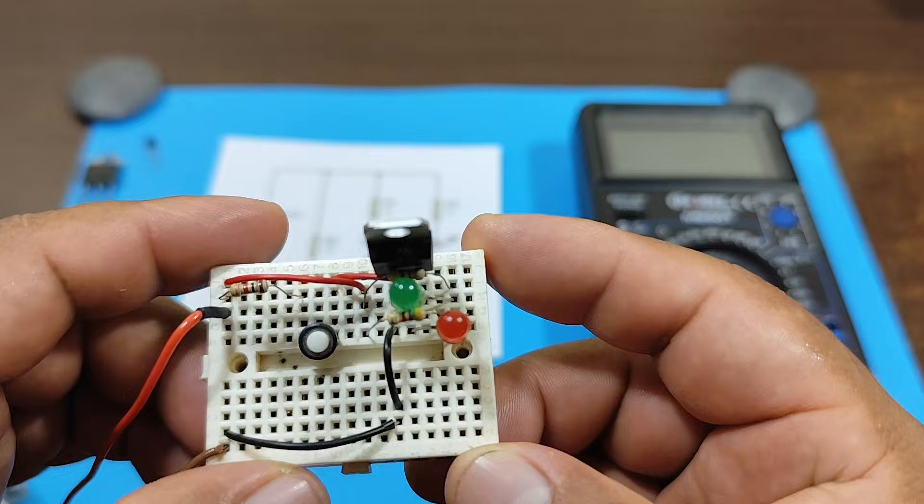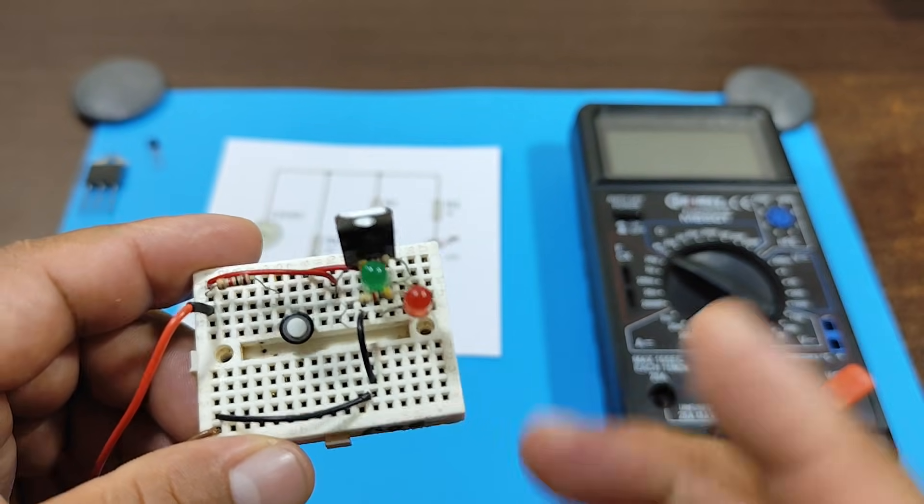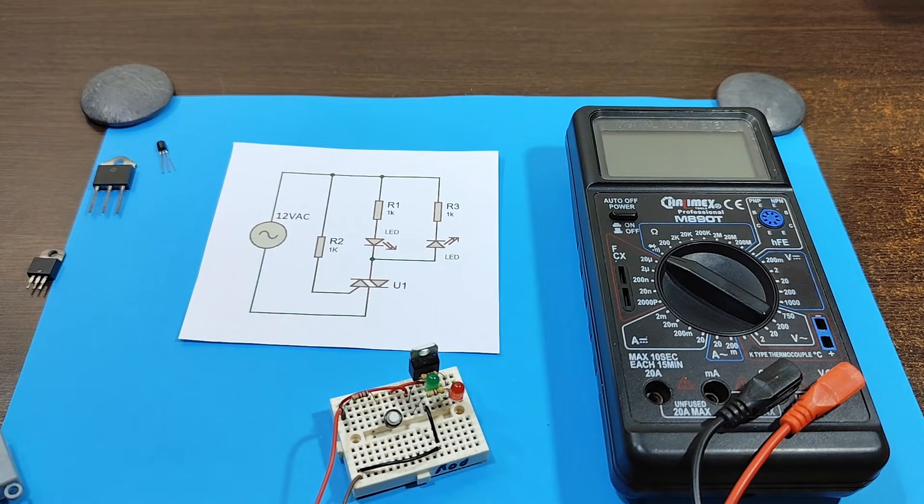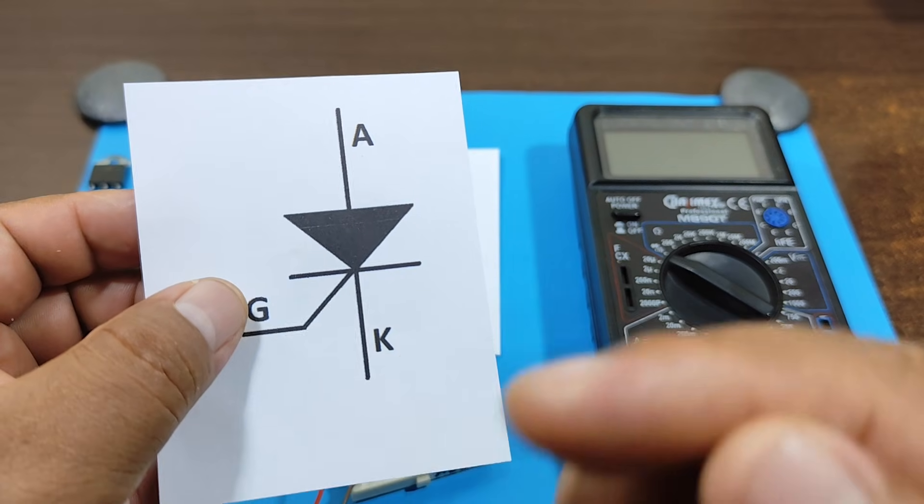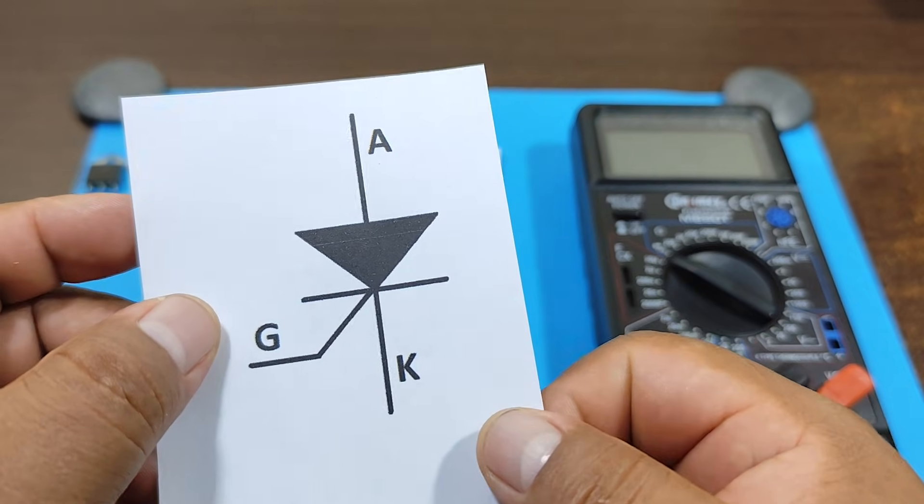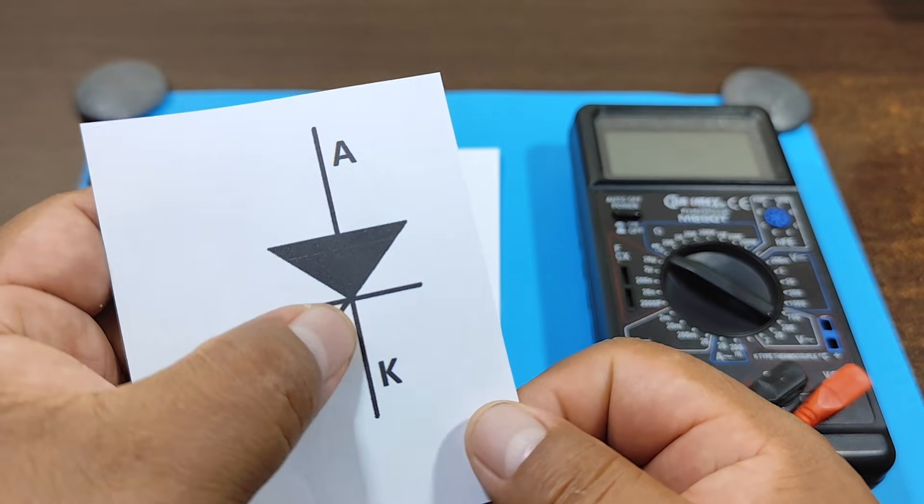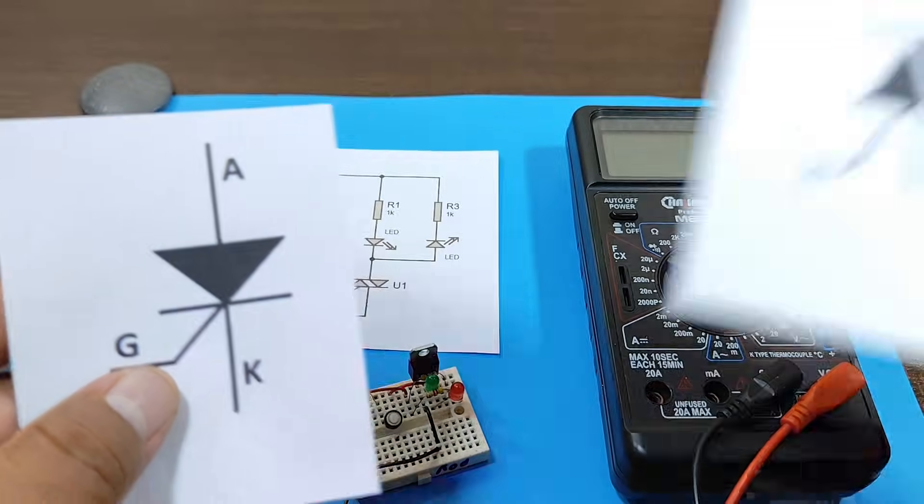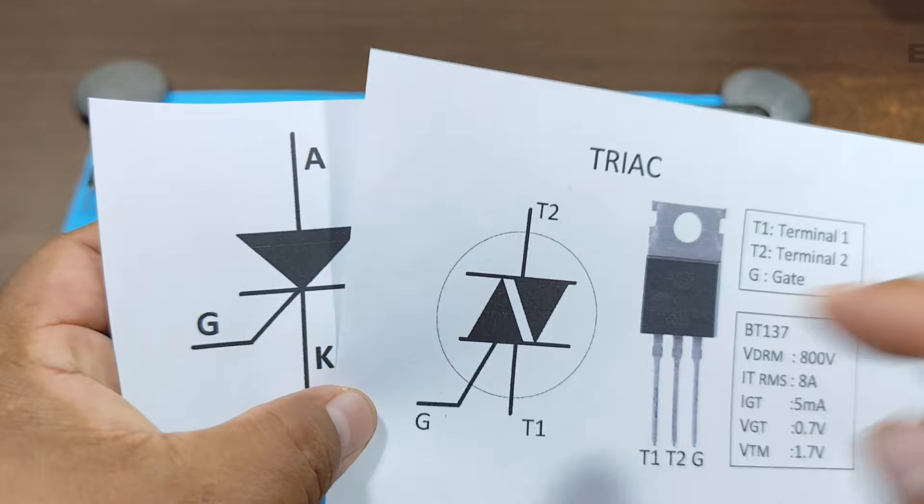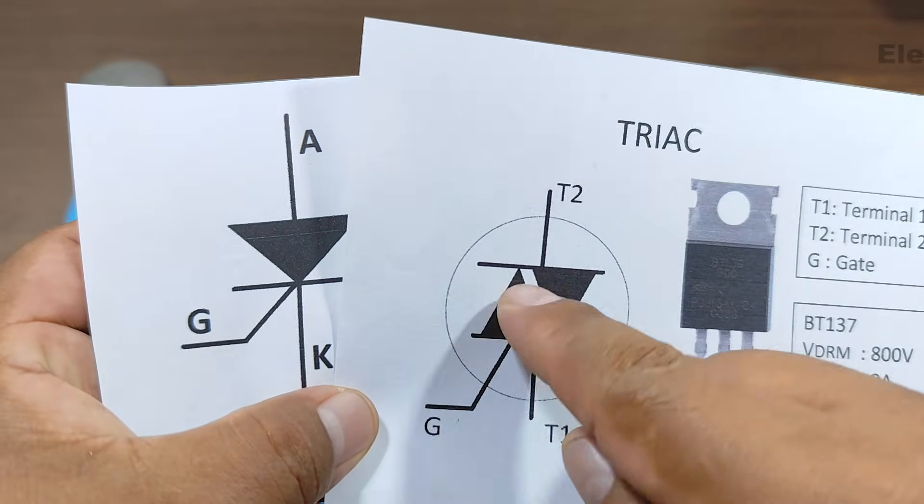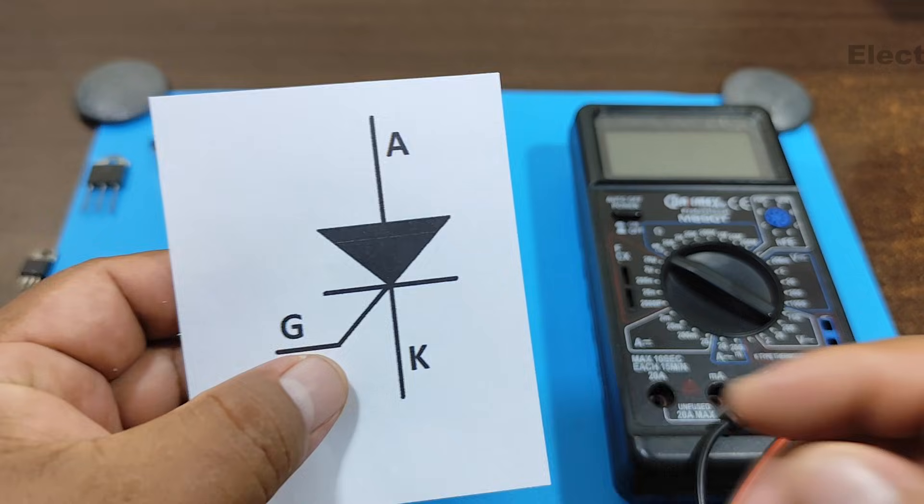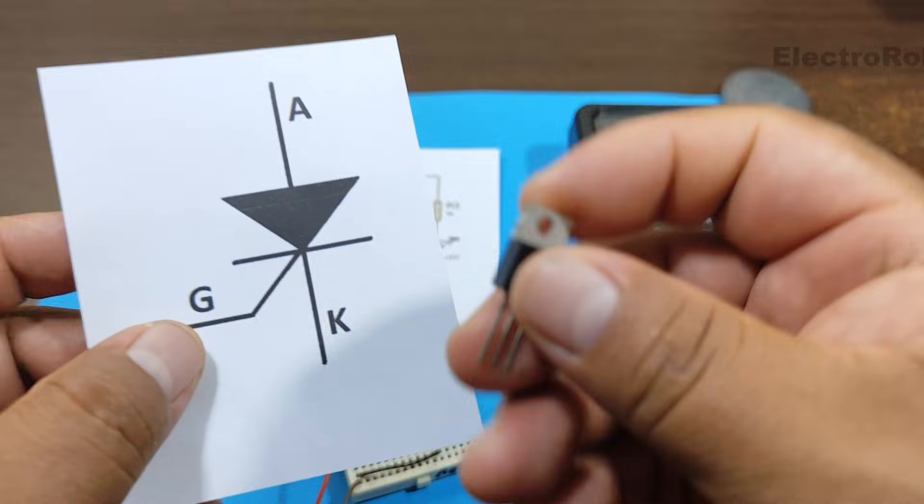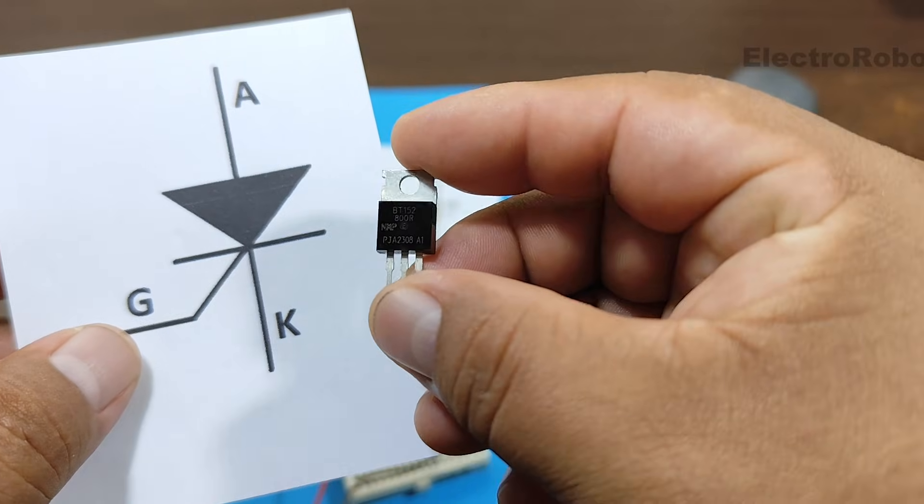But how can I confirm that it's allowing both half cycles of the alternating current to pass through? Well, first let's talk a little about this component. This component is an SCR, and as you can see, it's practically a diode. And if you look closely, the triac has two diodes. That is to say, a triac is composed of two SCRs, two of these here.